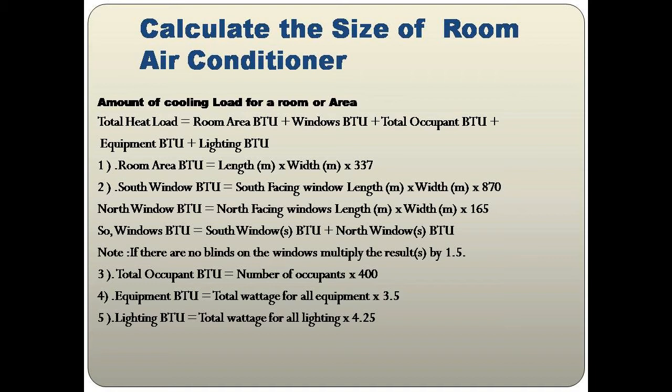For Total Occupants BTU: number of occupants × 400, since each person is considered to emit 400 BTU of heat. For Equipment BTU: total wattage of all equipment × 3.5. For example, one computer normally uses 120 watts; multiplying by 3.5 gives the equipment BTU.